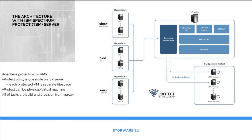First we need to understand how the architecture looks like. vProtect was designed to take all of the responsibility from the data flow and data backup and restore process. It's a fully agentless protection for different VMs based on different hypervisors, using the native hypervisor API to communicate with virtual machines and to perform snapshot backups.